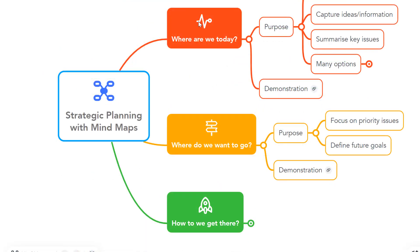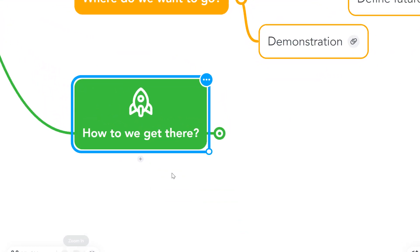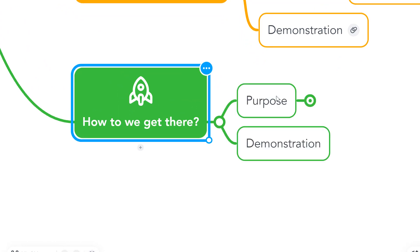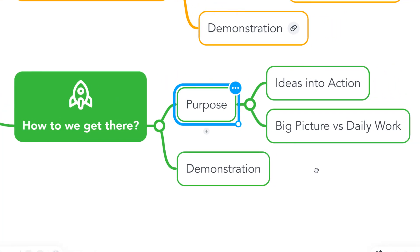The MindMeister map gives us a fantastic record of our strategic thinking and planning up to this point, and it's something that can be shared easily with team members and key stakeholders. Having captured and developed a view of our current situation and articulated some clear goals for the future, it's now time to start turning those ideas into action. The great news is that this too can be done within the same MindMeister map. A key idea here is to connect that big picture strategic thinking with specific tangible action areas that you or others in your team can progress when you're back at your desk. The benefit of using mind mapping software for this final stage is that it allows you and your team to switch easily from big picture thinking into much more detailed action planning, all within the same tool.